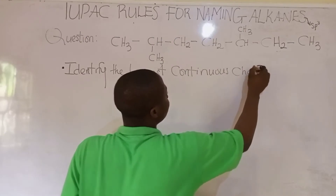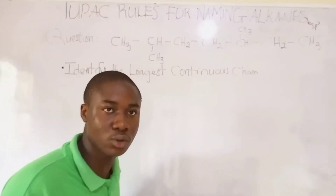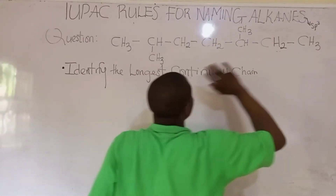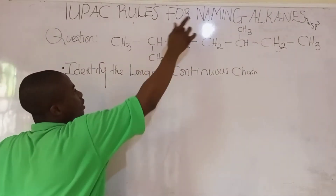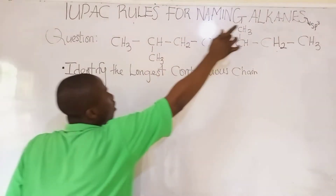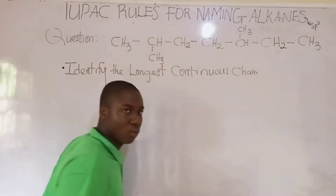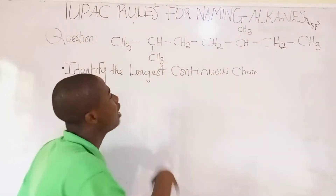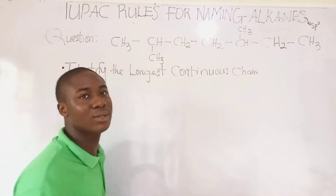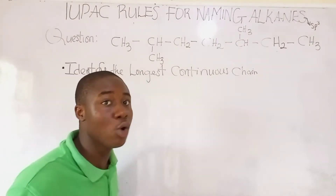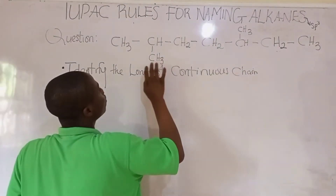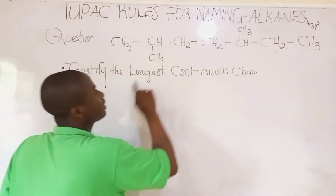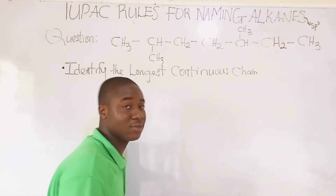Let's check this compound carefully to identify the longest continuous chain. When we count from one end to the other, we get 1, 2, 3, 4, 5, 6, 7 — so we're having 7 carbons in this direction. Let's check another direction and see if we get a longer chain. Counting that way we only get 3 carbons, which is smaller than 7.